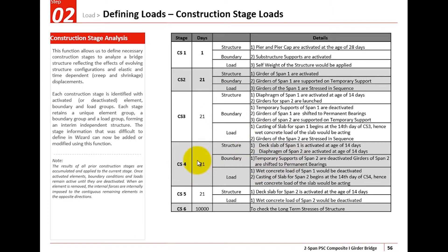In CS4, there is a 21-day duration where the temporary supports of span 2 would be deactivated, and the span 2 girders would be switched to permanent bearings. In CS5, the deck slab for span 2 would be activated, and the wet concrete load of span 2 would be deactivated. At the end of CS5, the construction process would be completed. Then in CS6, we will simulate the whole bridge for 10,000 days to accommodate long-term stresses due to time-dependent effects. These are all the construction stages that we are going to define in the subsequent steps.